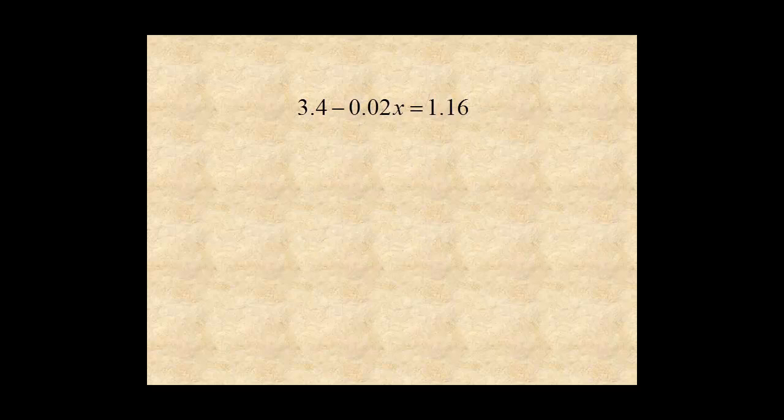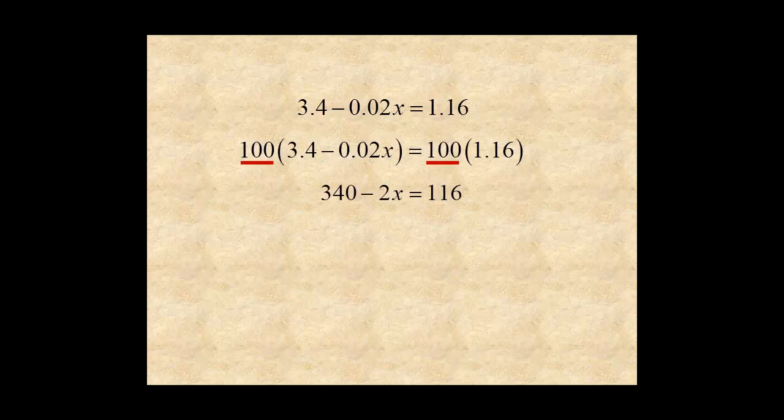A similar strategy can be used to solve equations with decimals. You can clear decimals from an equation by multiplying both sides by powers of ten. How many powers of ten is determined by which coefficient or constant has the most number of decimal places.